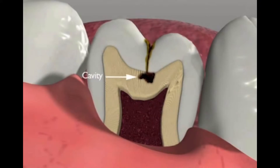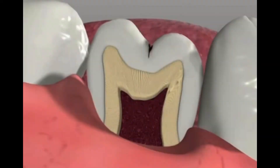Over the years, many attempts to stop pit and fissure tooth decay have been made. Here are the most common, their strengths and weaknesses.